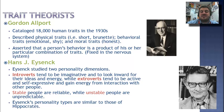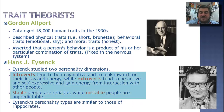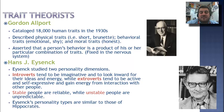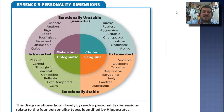Eysenck studied two personality dimensions — think of two lines crossing. He studied the differences between introverts and extroverts. Introverts tend to be imaginative and look inward for their ideas and energy, while extroverts tend to be active and gain energy from interaction with other people. He also studied the stable versus unstable continuum — stable people are reliable, and unstable people are unpredictable or unreliable. His personality types are similar to those of Hippocrates, who was on to something. Look at Eysenck's personality dimensions and see if you fall into any of these different categories.